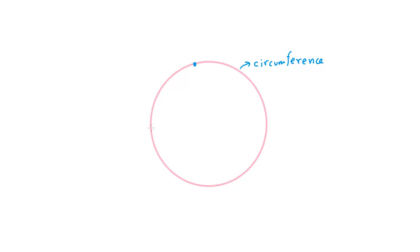A chord is a line that joins two points on the circumference. So when these two points on the circumference are joined, we call that line a chord.